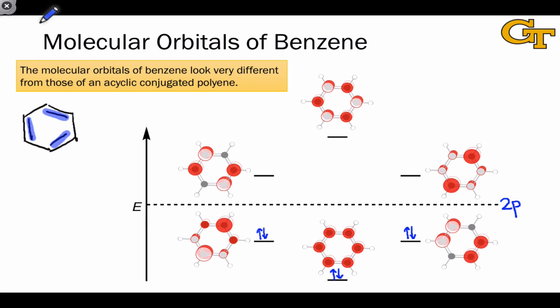But if we focus on the number of nodes in each structure, we can start to recognize a familiar pattern in the shapes of these molecular orbitals. The lowest energy orbital has no nodes. All of the p orbitals are overlapping in a constructive fashion.